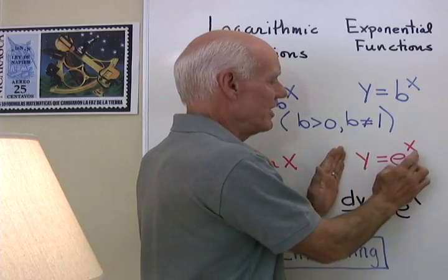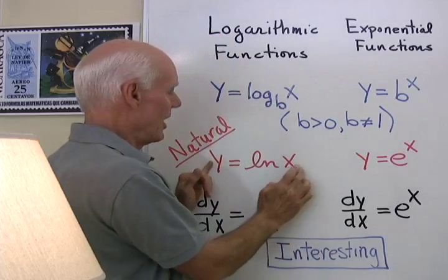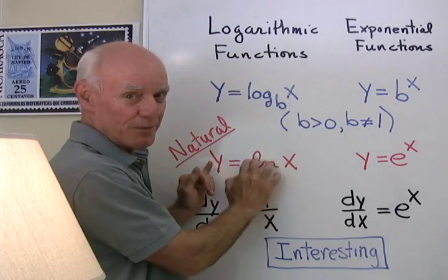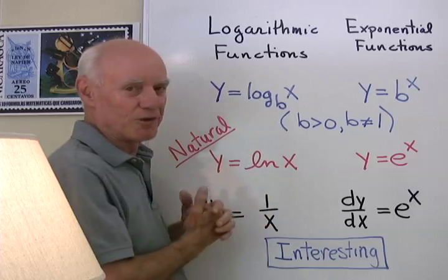So y equal e to the x is called the natural exponential function, y equal logarithm base e we write like this is the natural logarithmic function.